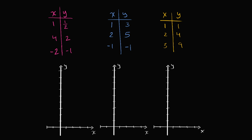Just as a reminder, a proportional relationship is one where the ratio between the two variables — say y over x, or you could go the other way and take x over y — is always going to be some constant number. Or you could rewrite it: if you multiply both sides by x, you get that y is always going to be equal to some constant times x.